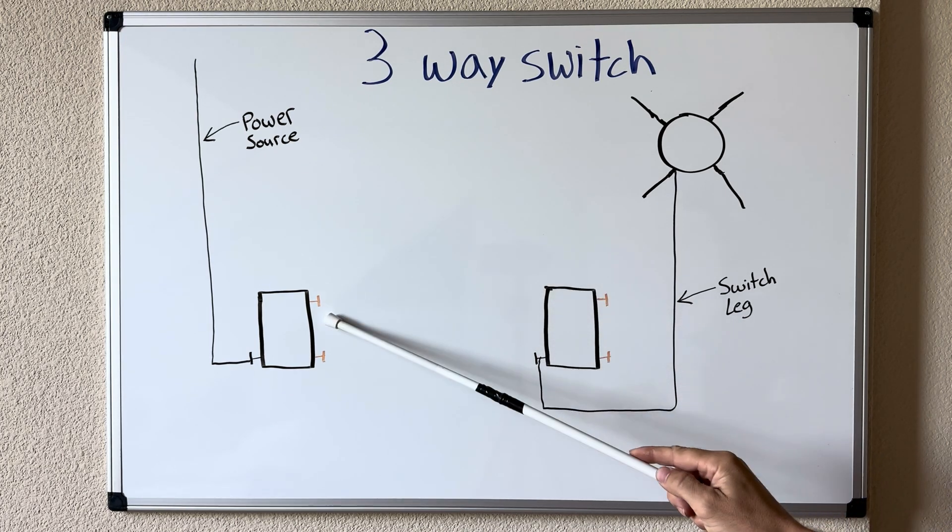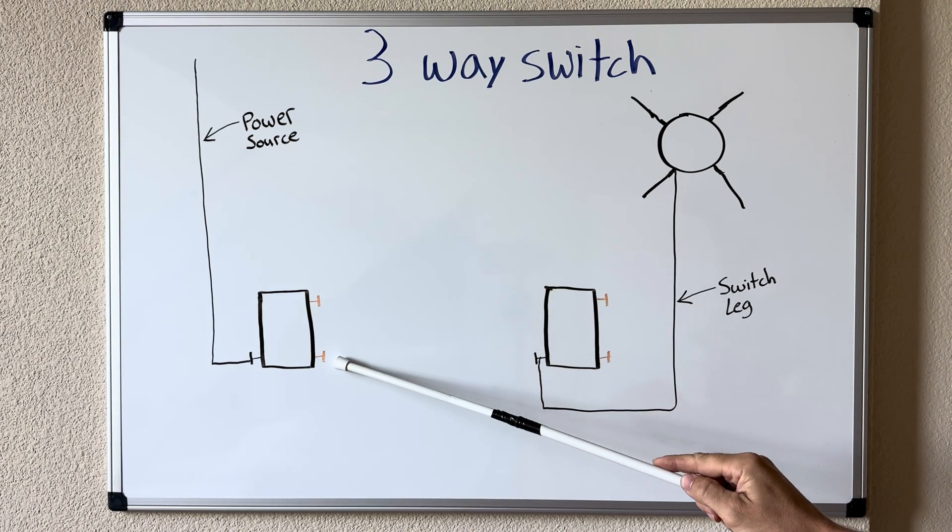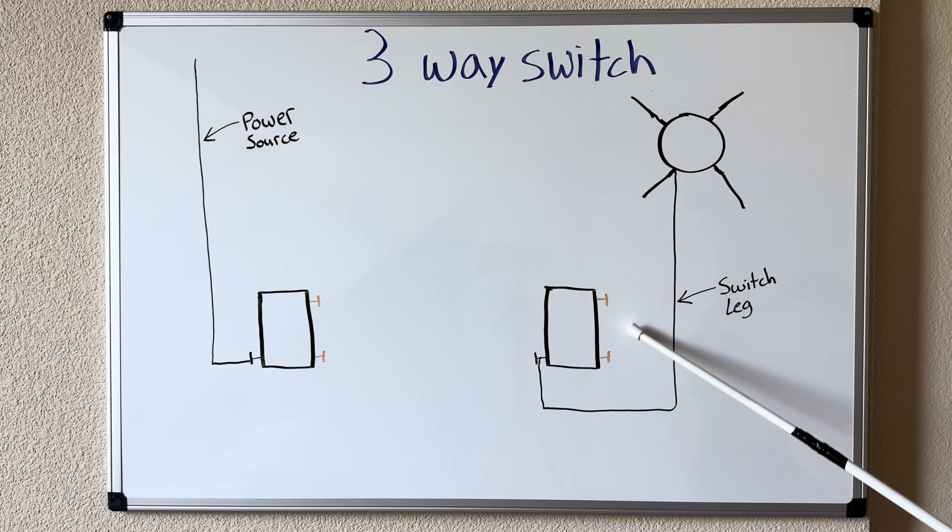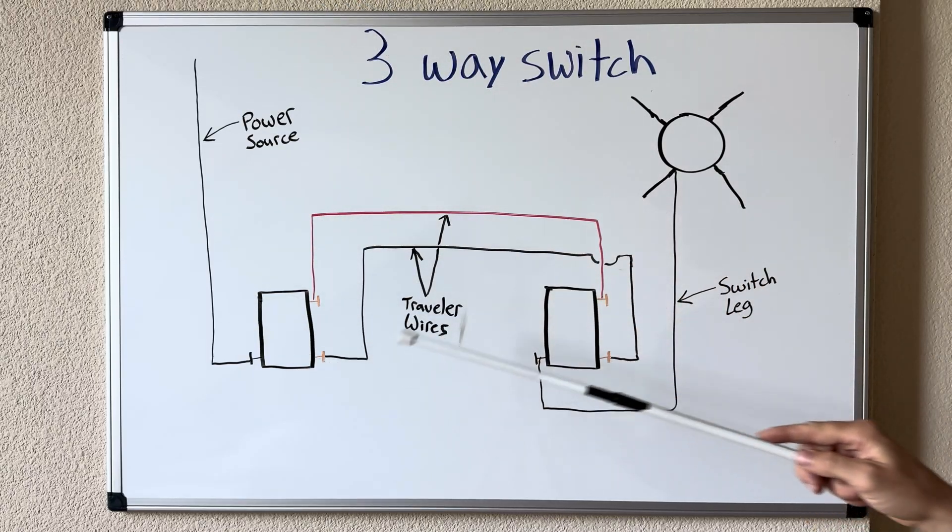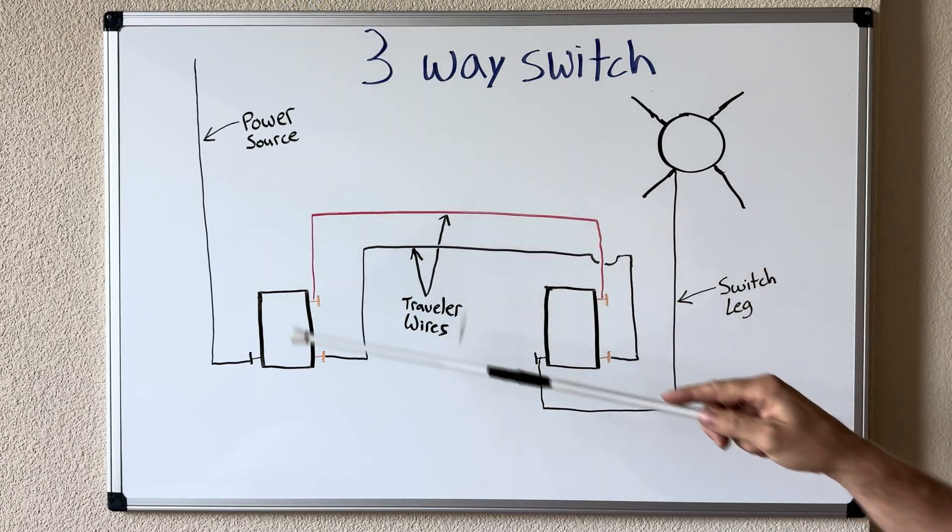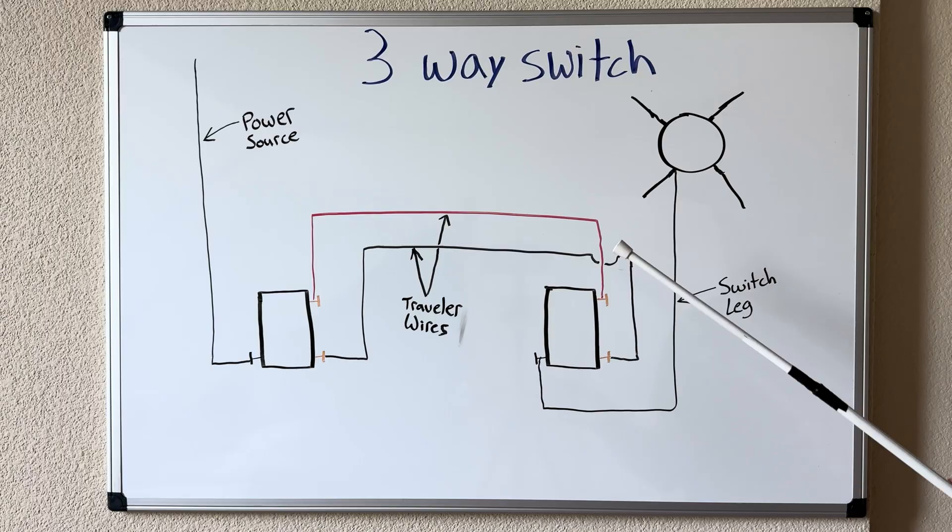Now to connect our two switches together we're going to use these two brass screws to tie in the switches together using what we're going to call traveler wires. Now in order to make this as easy to understand I didn't want to add the neutrals in the grounds just yet. I want to go over what we have here in depth, get an understanding of that and then we can add the rest of our wires.